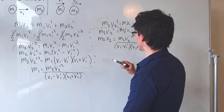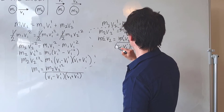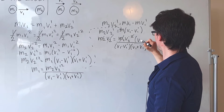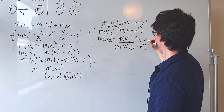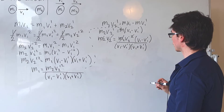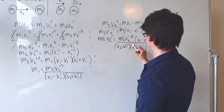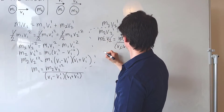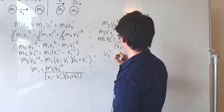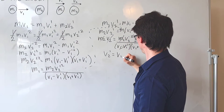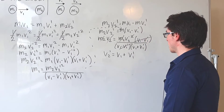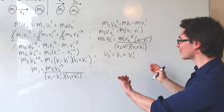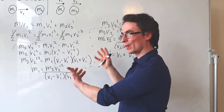Now we can do some cancellations. We can cancel the m2s, cancel a factor of v2 prime to eliminate the square, and cancel the (v1 minus v1 prime) factors. What we're left with is that v2 prime equals v1 plus v1 prime — which is a really interesting and relatively simple result.